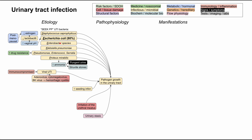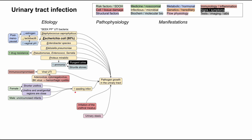Some things that predispose you to seeding infections: firstly, being female, through a couple of mechanisms. Women have shorter urethras, meaning bacteria have a shorter distance to travel. In addition, the urethra, anal region, and genital regions in women are much closer together, so bacteria from those regions can more easily seed the urethra. Men have much lower chances — about 20 times less than women. The only men really predisposed are uncircumcised infants up to six months old.